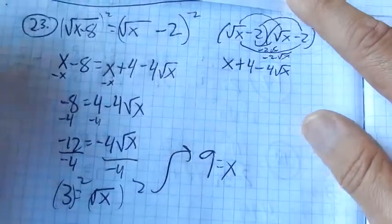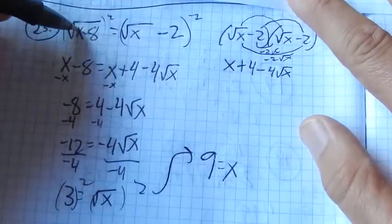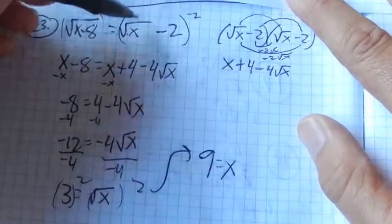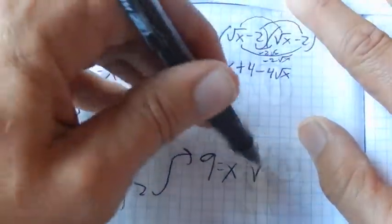So let me check it and make sure that it works. 9 minus 8 is 1, square root of 1 is 1. Yep. Square root of 9 is 3, 3 minus 2 is 1, 1 equals 1. Check.